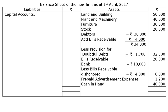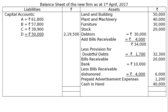On the liability side — Capital accounts: A's capital Rs.61,800; B's capital Rs.57,800; C's capital Rs.39,900; D's capital Rs.50,000. Creditors Rs.20,000; Bills Payable Rs.10,000. The totalling of both sides of the balance sheet is Rs.2,39,500. This is the final answer.